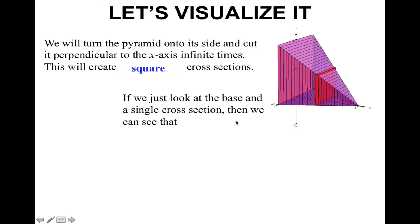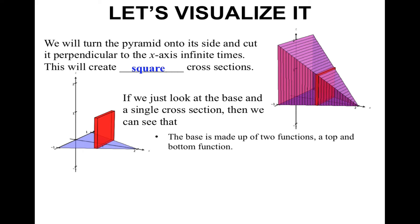Now, if we just looked at the base and a single cross-section, then we can see something that looks like this. This is just the base and only one cross-section. We can see that the base is made up of two functions, a top function and a bottom function. Here's the x-axis, and this is the y-axis, and then the 3D is your z-axis.